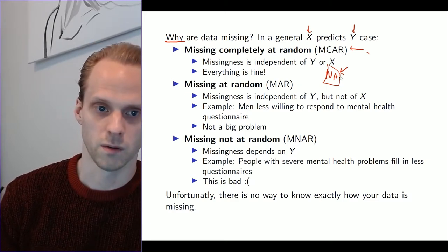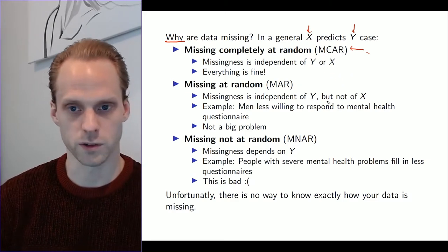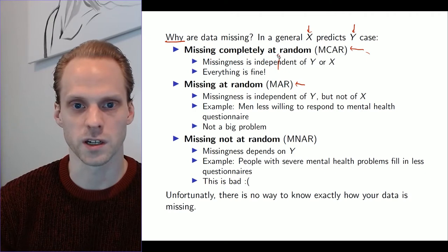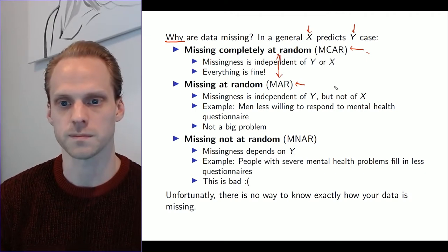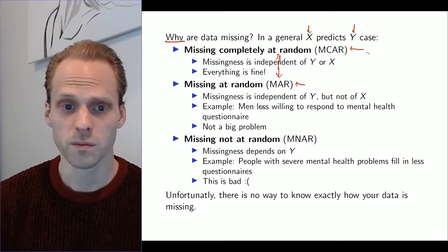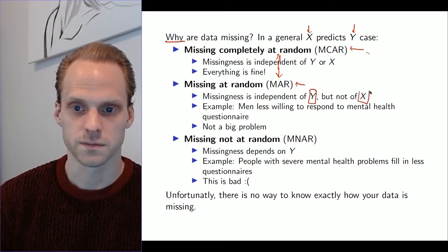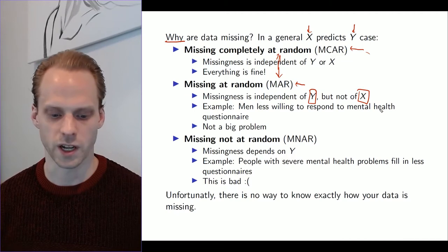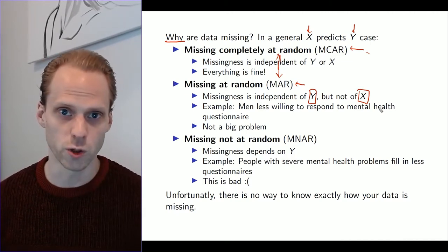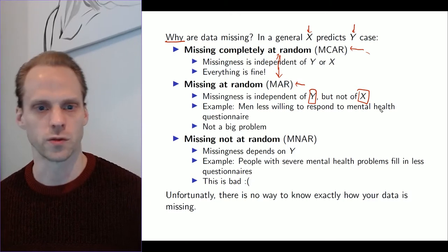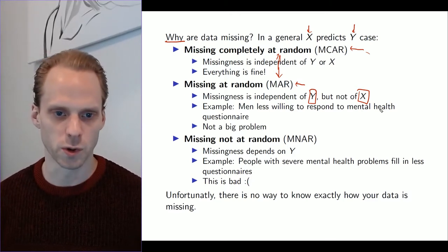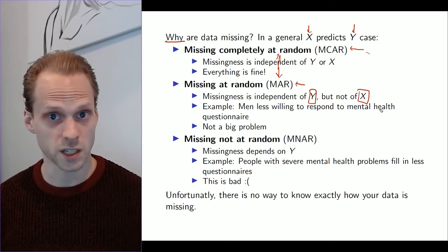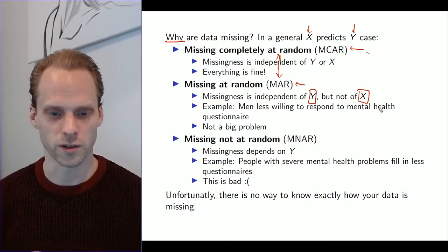Then the other type we have, which is also a good thing still, is missing at random (MAR). It's a bit weird, confusing names here. In missing at random, the missingness is independent of Y but not of X. That means there are reasons why people are not giving an answer, but it has nothing to do with the answer they would have given otherwise. For example, maybe men are less willing to respond to certain questions than women.